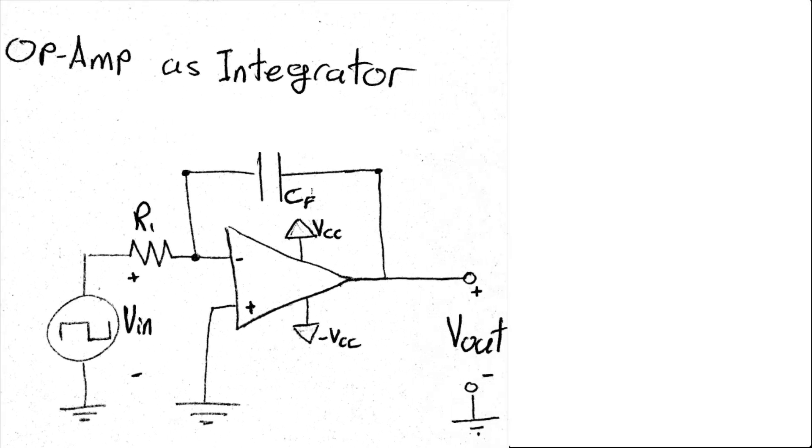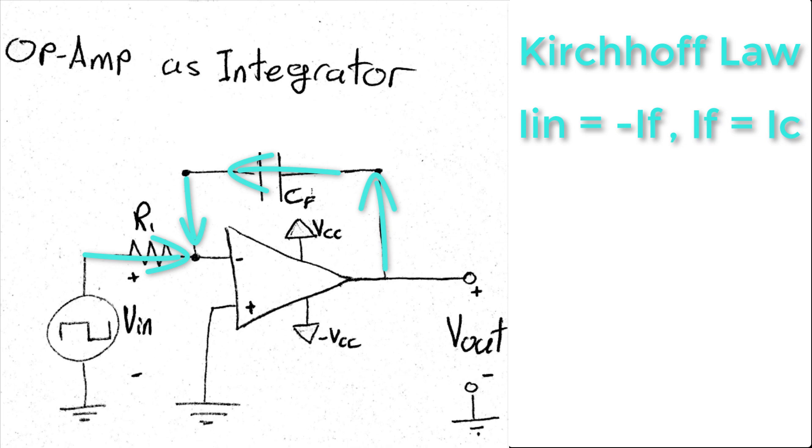To make analyzing this circuit easier, we need to do two assumptions. First, the voltage at the non-inverting input is equal to the voltage at the inverting input. Second, the current at these terminals is equal to zero. By knowing this, we can use Kirchhoff's law to equate the input current to the feedback current, which is nothing but the capacitor current.